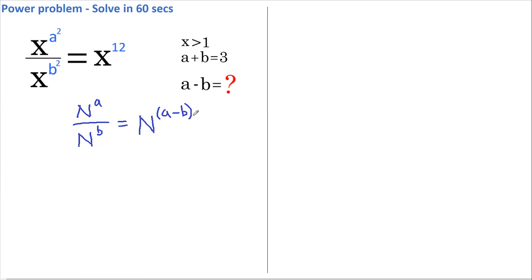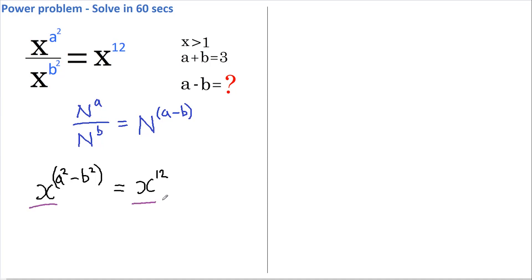This allows us to rewrite this as x to the power of a squared minus b squared, and this all equals x to the power of 12. As we now have identical bases, we can simply set the powers equal to each other, so a squared minus b squared must equal 12.